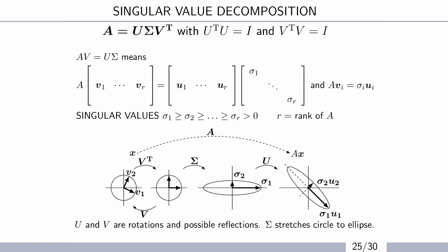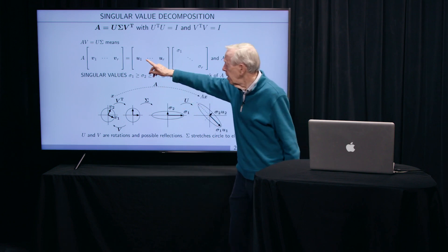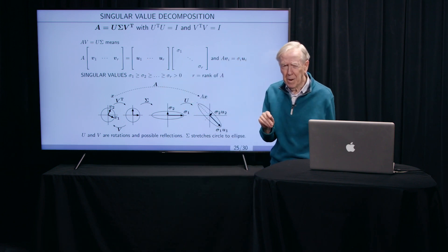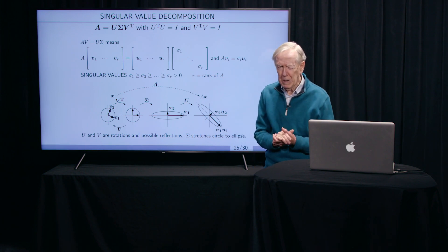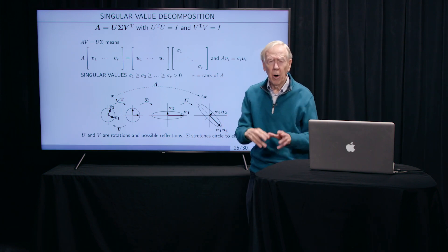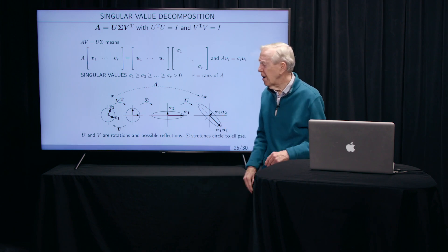But the beauty is, now we've got two of those to work with. We can make all the U's orthogonal to each other, all the V's orthogonal to each other. We can do what only symmetric matrices could do for eigenvectors. We can do it now for all matrices, not even square. It's just this is where life is.